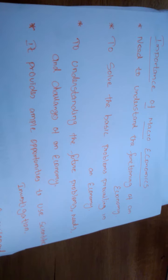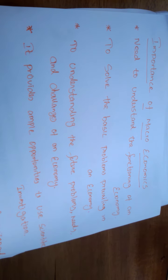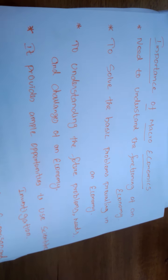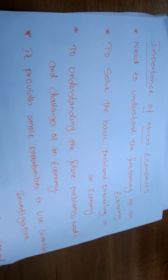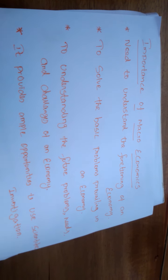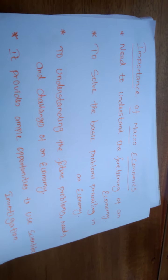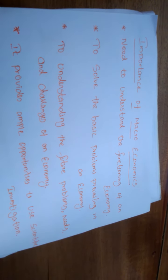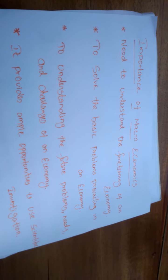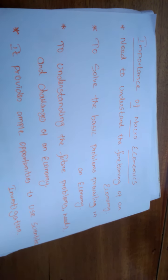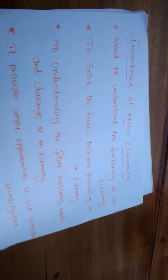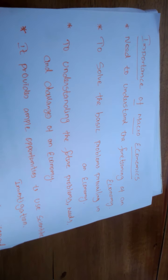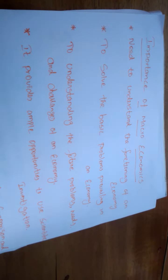The next basic problem is 'how to produce.' Every society has to decide whether it will use labour-intensive technology or capital-intensive technology. If you adopt more capital-intensive technology, there will not be employment opportunities for all workers, and many people will face unemployment problems. So before deciding on a technology method, we must decide how to produce the product.